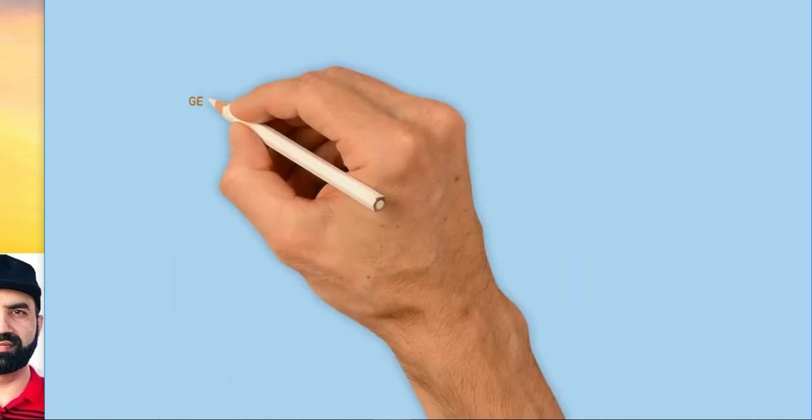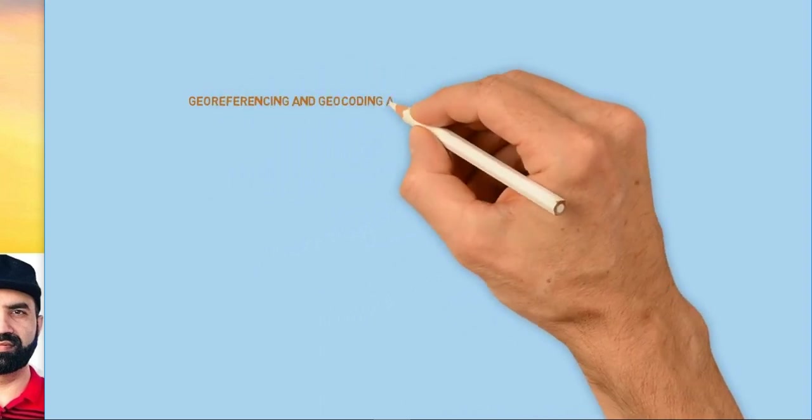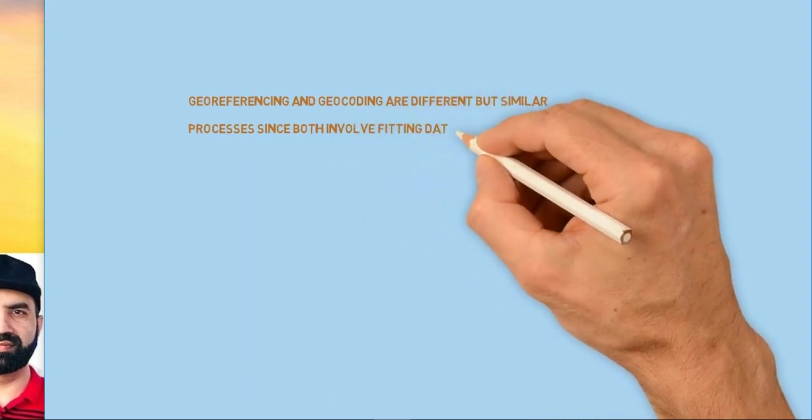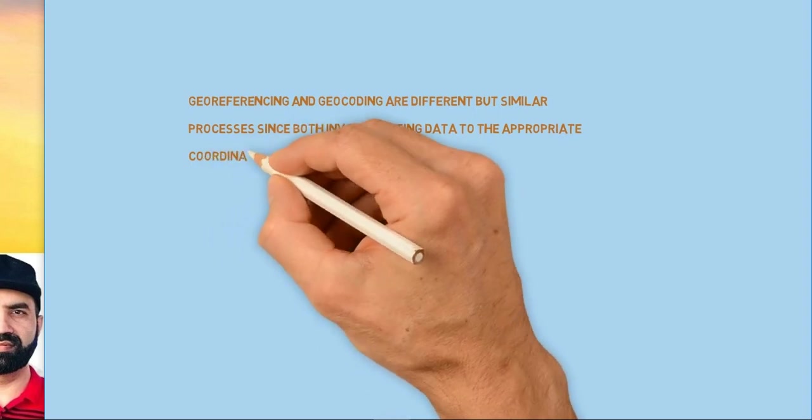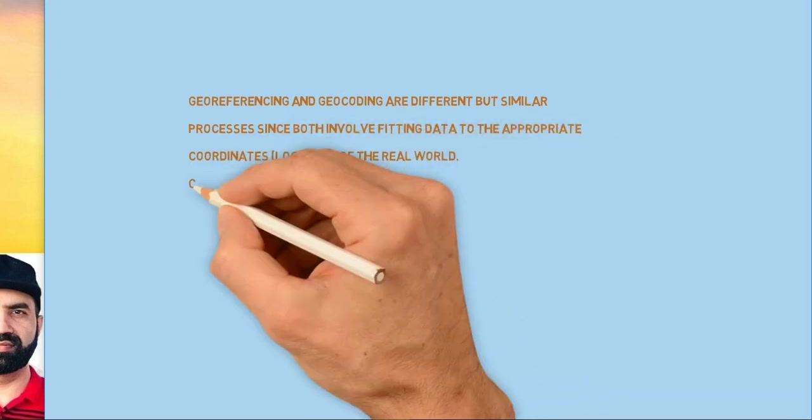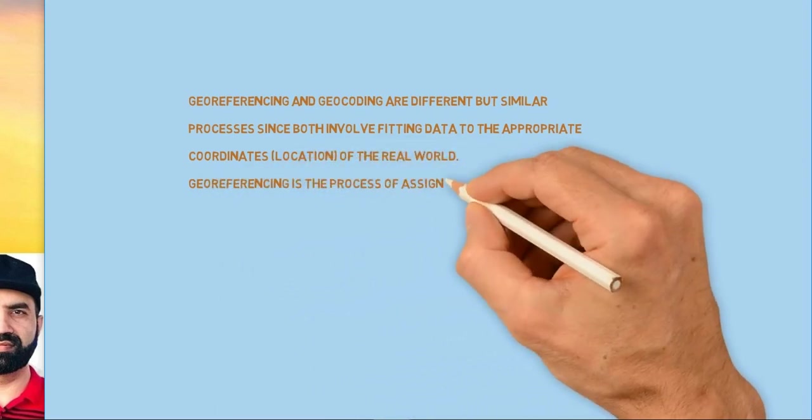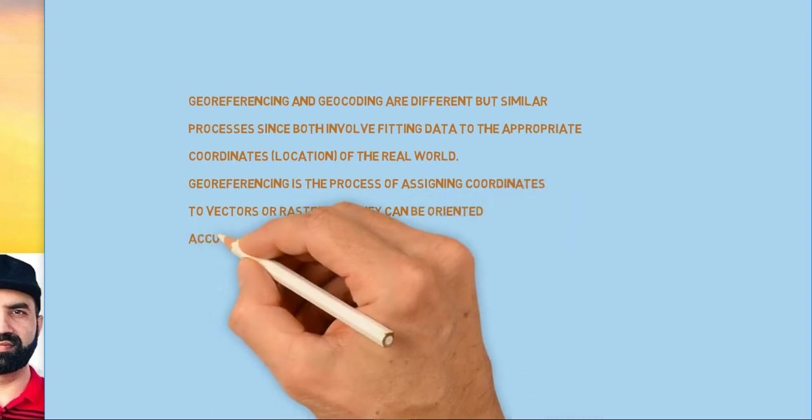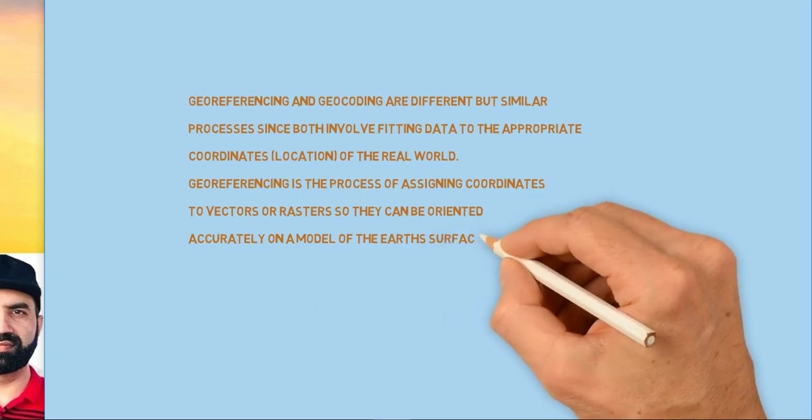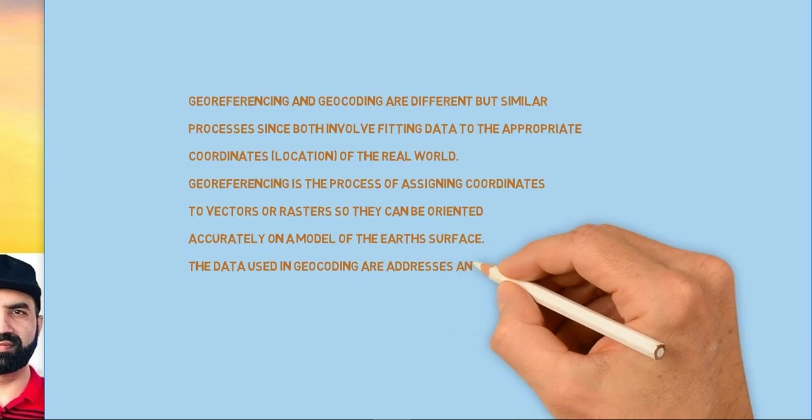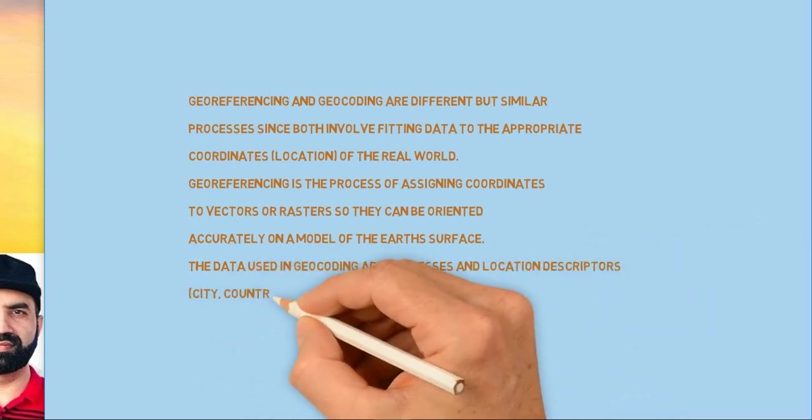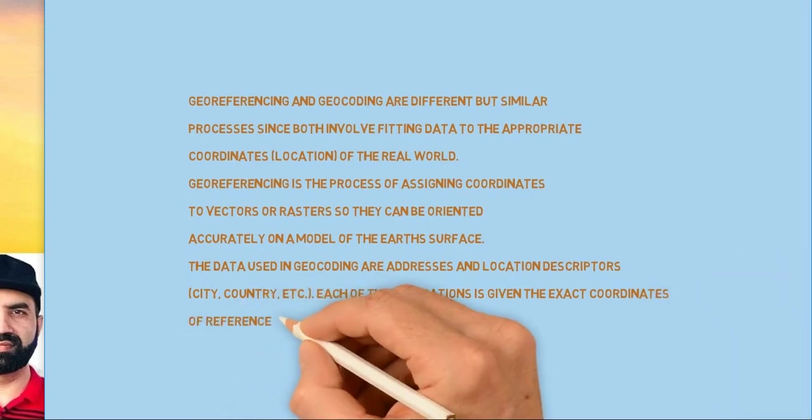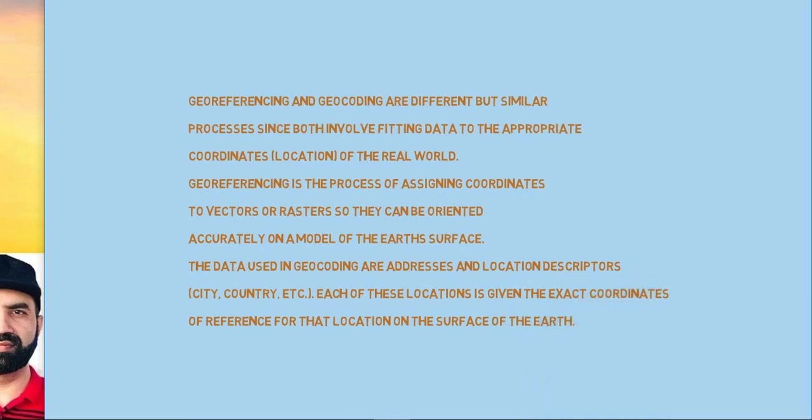Georeferencing and geocoding are different but similar processes, since both involve fitting data to the appropriate coordinates—location—to the real world. Georeferencing is the process of assigning coordinates to vectors or rasters so they can be oriented accurately on a model of the earth's surface. The data used in geocoding are addresses and location descriptors—city, country, etc. Each location is given the exact coordinates for that location on the surface of the earth.